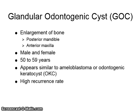The glandular odontogenic cyst often presents as an enlargement of the bone. The posterior mandible and anterior maxilla are the most commonly reported locations. Both men and women may develop the cysts, and there is a peak incidence in the fifth decade. The radiographic appearance may be unilocular but is often multilocular, appearing similar to that of an ameloblastoma or odontogenic keratocyst. When not completely surgically removed, these cysts have a high recurrence rate.